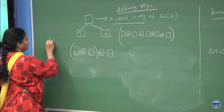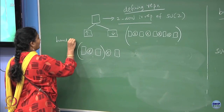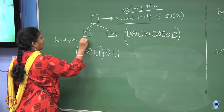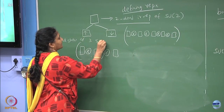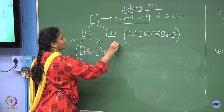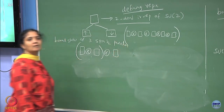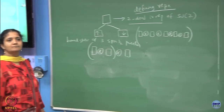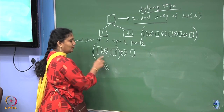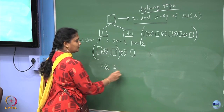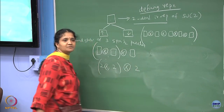Let us take the bound state of 3 spin-half particles. In dimensions it is 2, this is 2-dimensional, this is 2-dimensional, and then another 2-dimensional.